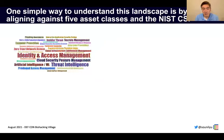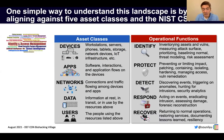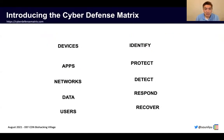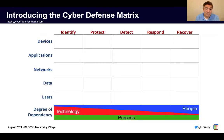The Cyber Defense Matrix, at its core, consists of two dimensions. On one dimension, it's the things that I care about — these five asset classes: devices, applications, networks, data, and users. On the other dimension, it's the five functions of the NIST cybersecurity framework: identify, protect, detect, respond, and recover. When we bring these two dimensions into a five-by-five grid, we get what I call the Cyber Defense Matrix.